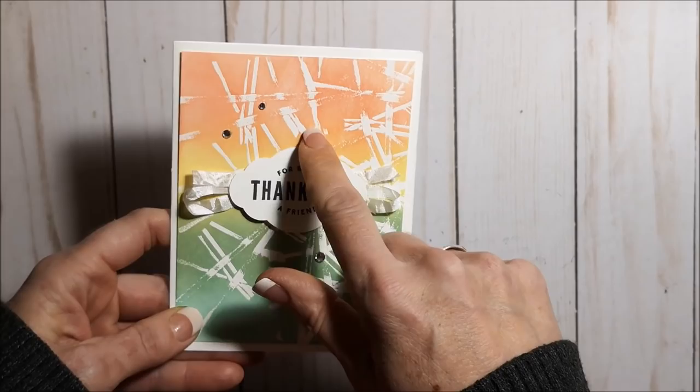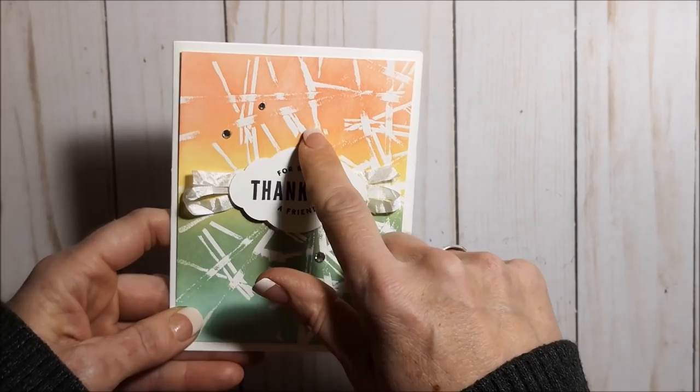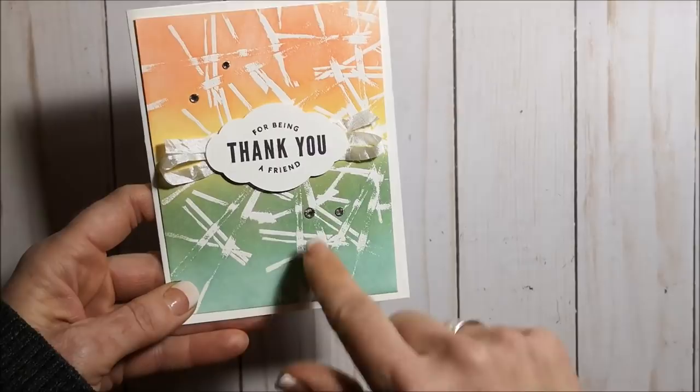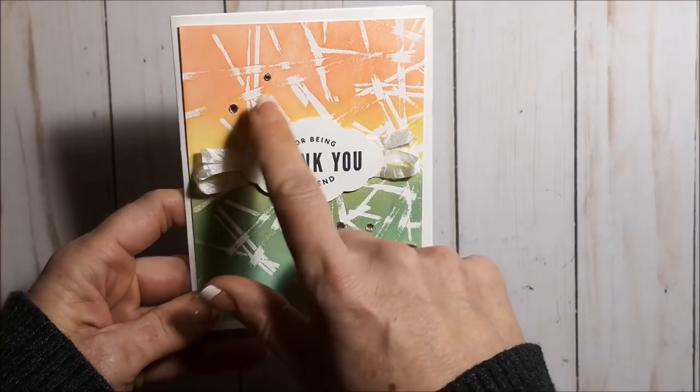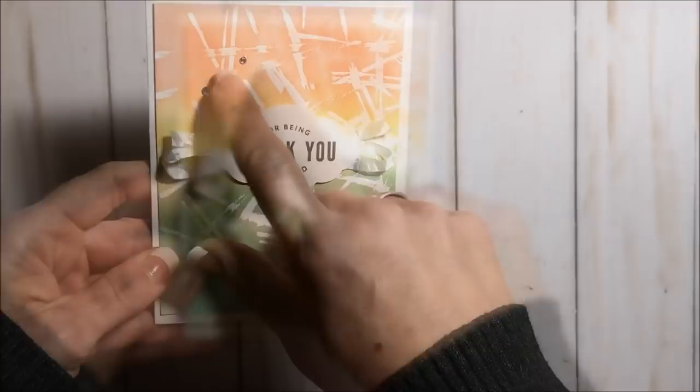Now on this card I used the embossed resist technique. I stamped my rubber bands first and then embossed them in white powder. And then I sponged on the color for the background. So the bottom is Pool Party, then Mint Macaron, Soft Saffron and Calypso Coral. I added a sentiment, punched it out, some ribbon and a few rhinestones to finish it off.